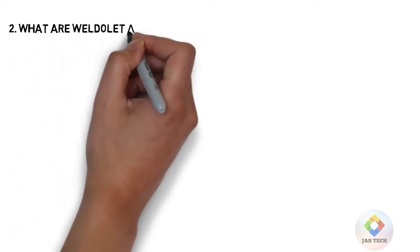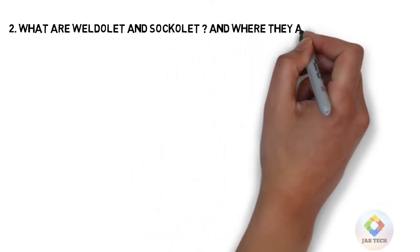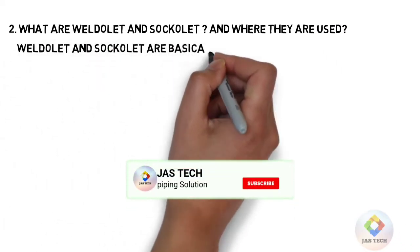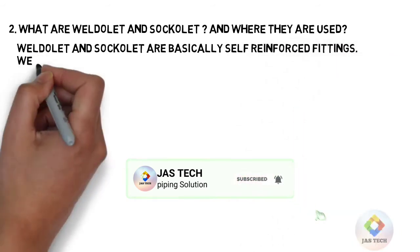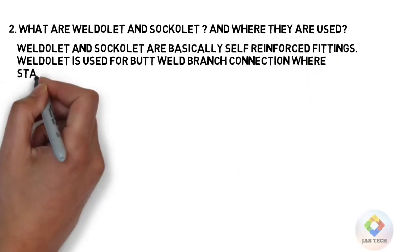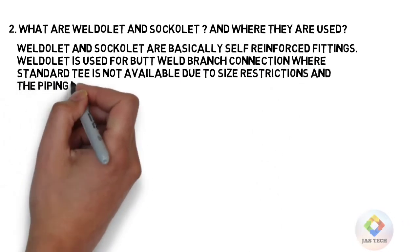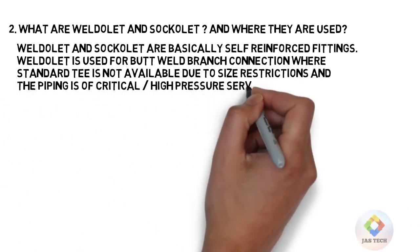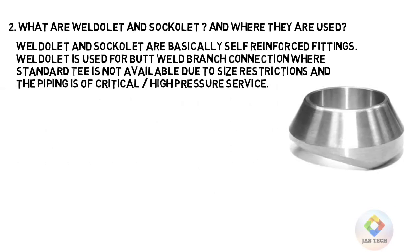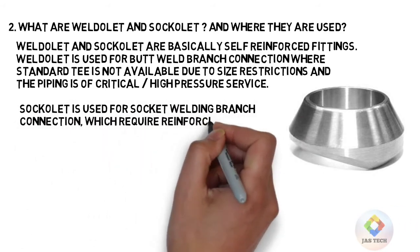Q2: What are Weldolet and Sockolet and where are they used? Weldolet and Sockolet are basically self-reinforced fittings. Weldolet is used for butt weld branch connection where a standard tee is not available due to size restrictions and the piping is of critical or high pressure service. Sockolet is used for socket weld branch connection which requires a reinforcing pad.